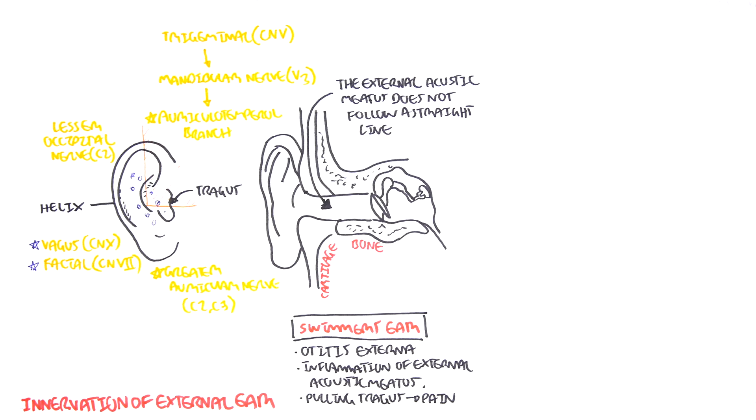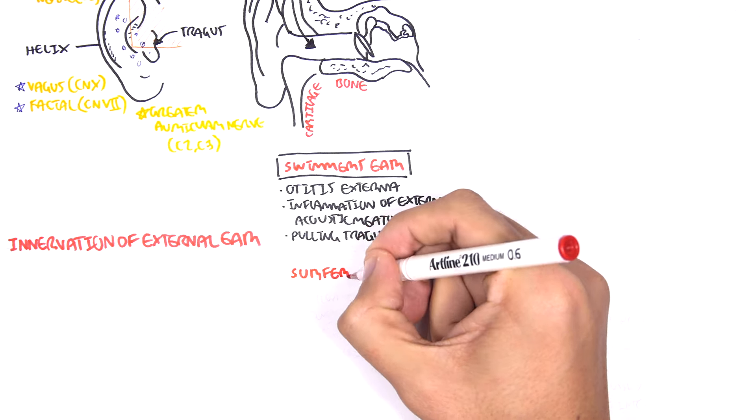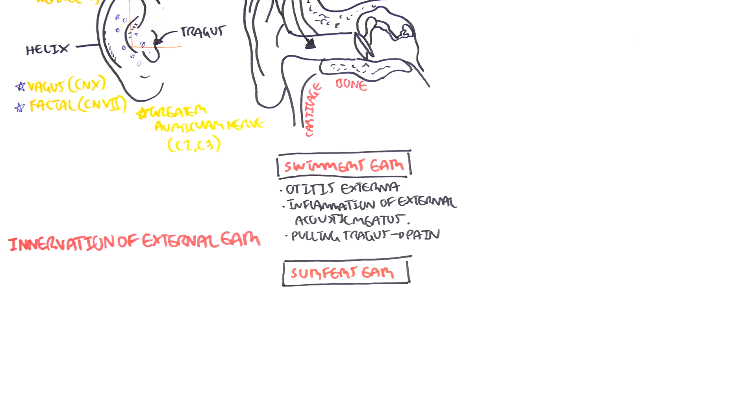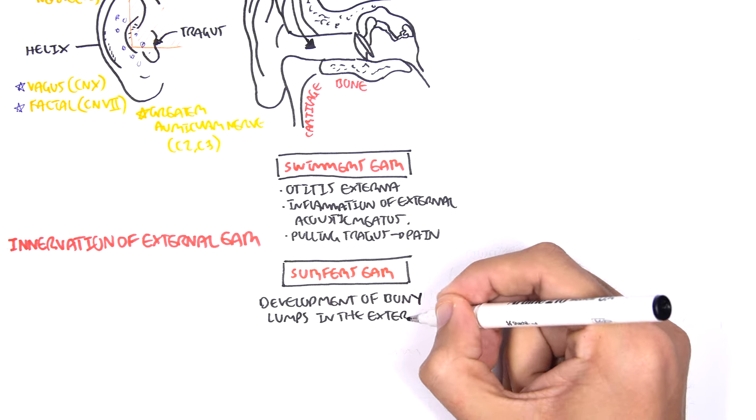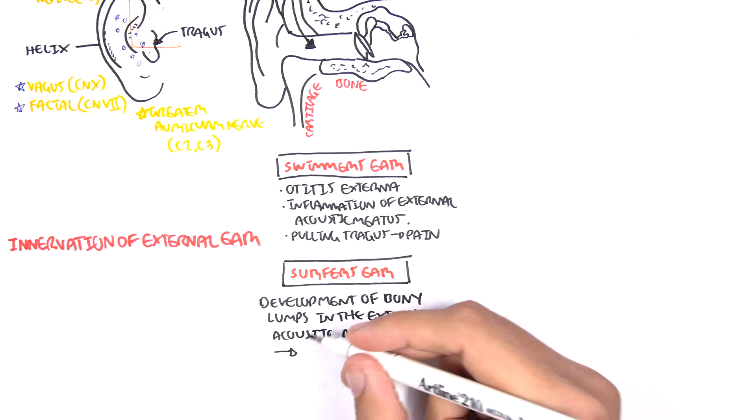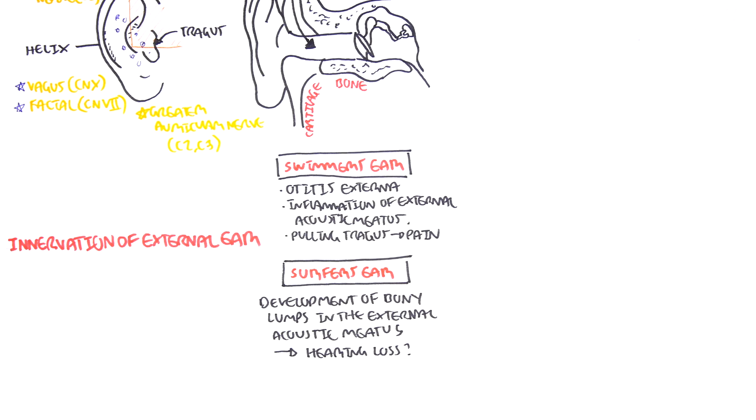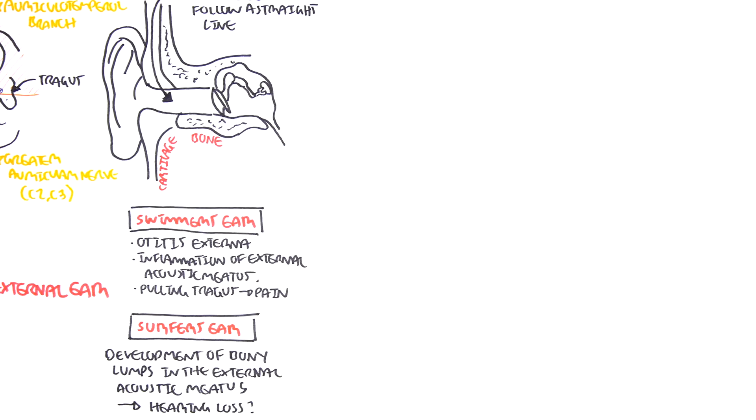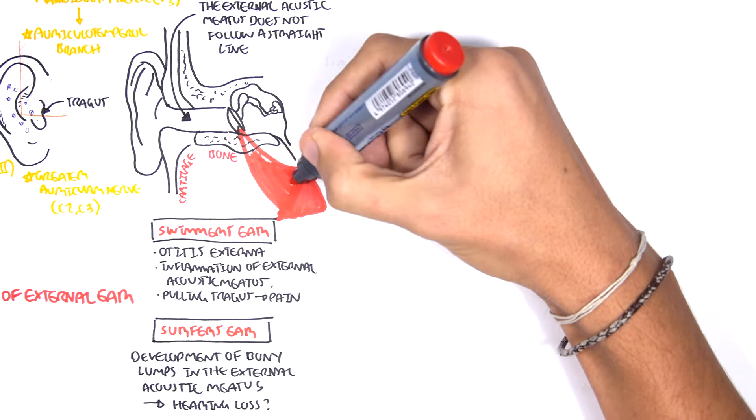Another important anatomical part of the auricle is the helix here. There is also another condition of the external ear known as surfer's ear, which is where there is a development of bony lumps in the external acoustic meatus. It's not dangerous but can potentially lead to hearing loss.